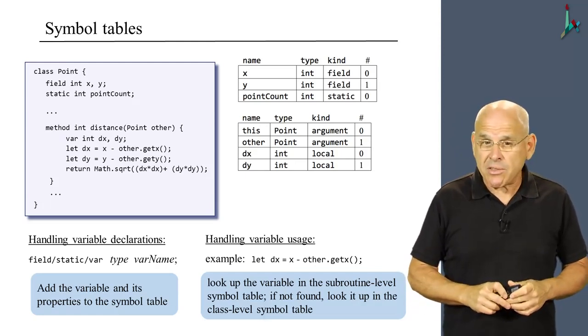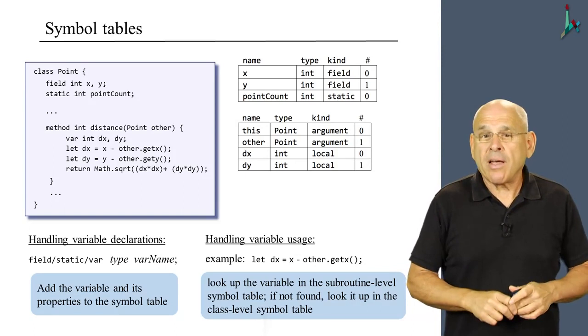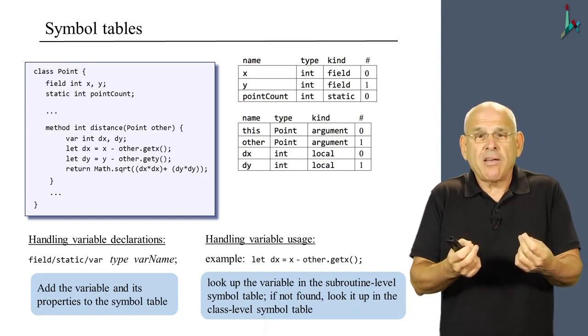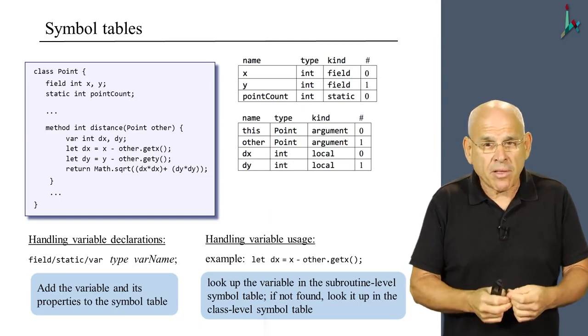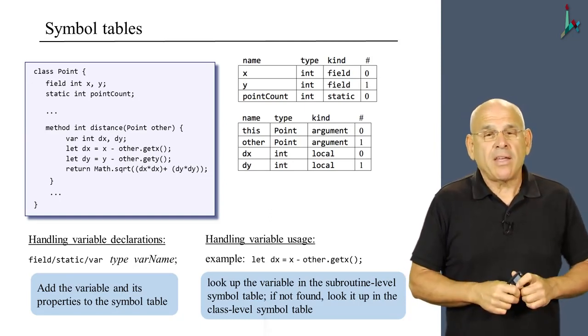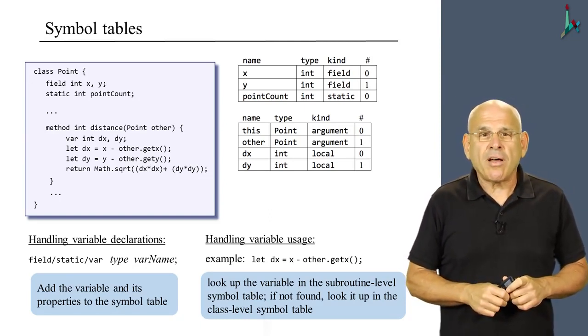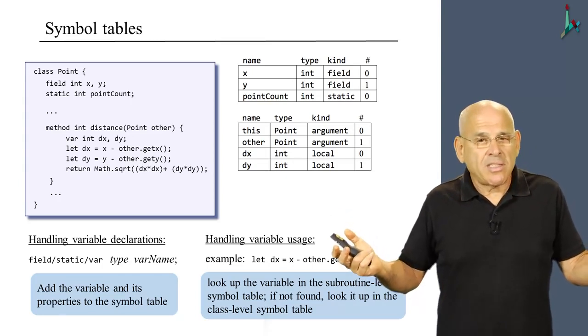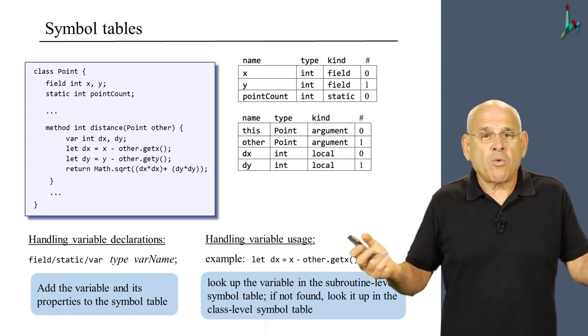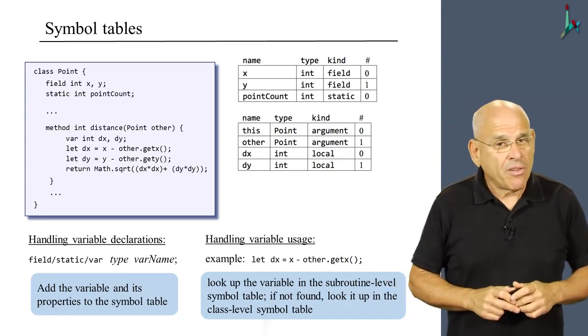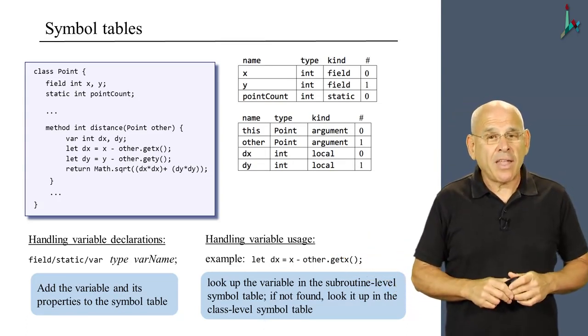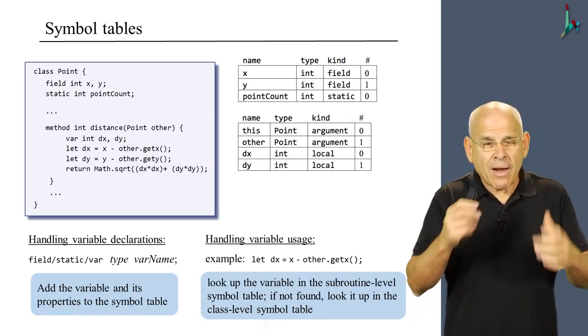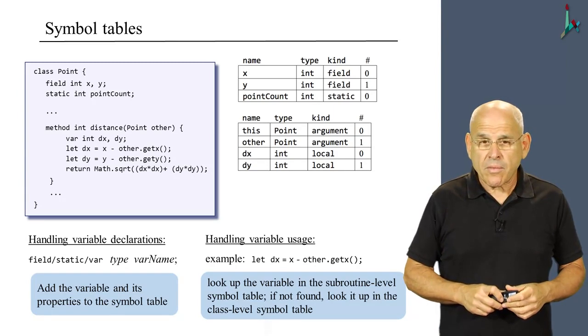So in this example, we have the two possibilities. Because dx, for example, is a local variable. So we'll find it right away in the symbol table of the distance method. But x will not be found in the symbol table of distance. So we look up the class level variable, and indeed, we find that x is right there. So that's how the lookup algorithm works.